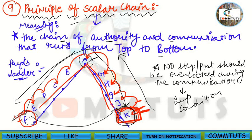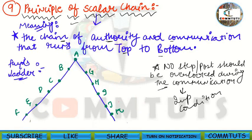No post or step should be skipped — for instance, F cannot skip telling E and go directly to D, or skip to B. If F has to get his message to K, all nine steps must be followed, including all immediate superiors. Only then will the message finally reach K. This is an important condition of the Principle of Scalar Chain.